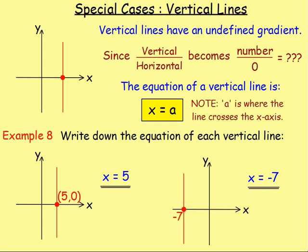A vertical line has an undefined gradient, because the vertical distance divided by the horizontal distance — the horizontal distance is zero, and you cannot divide by zero. The equation of a vertical line changes from the usual form: instead of y equals mx plus c, it is x equals whatever number the line goes through on the x-axis. So a vertical line through (5, 0) gives x equals 5, and one through (negative 7, 0) gives x equals negative 7.